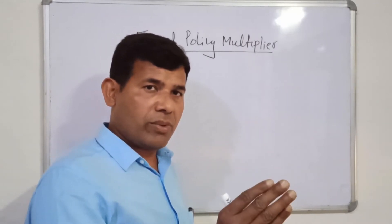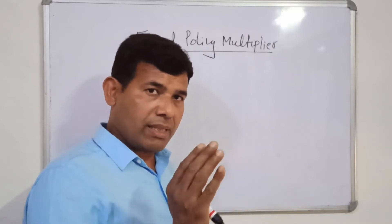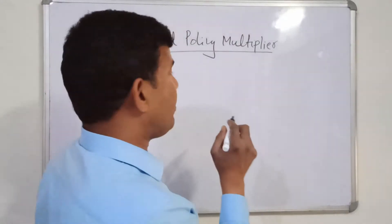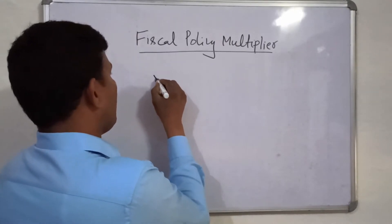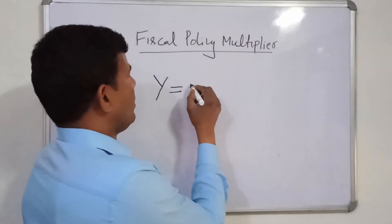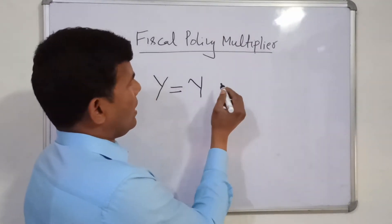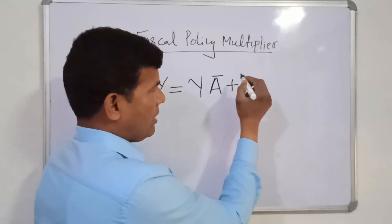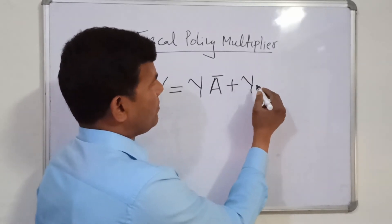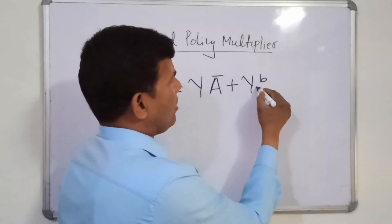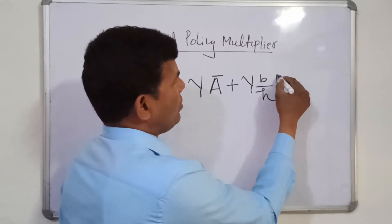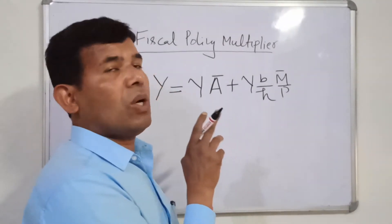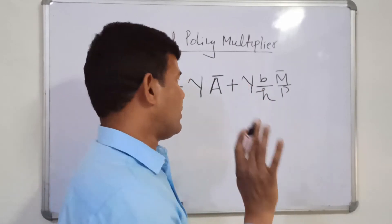Through IS and LM equations using an algebraic approach, we are able to derive the equilibrium level of income. That equilibrium level of income is written as: Y = gamma × A-bar + gamma × (B/H) × (M-bar/P). This is the equilibrium level of income derived on the basis of IS and LM equations.